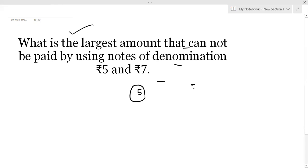Here we have ₹5 and ₹7 notes, so we need to find the largest amount that we cannot pay with these notes. We know that amounts like ₹2, ₹3, ₹4 cannot be paid because the minimum denomination is ₹5.